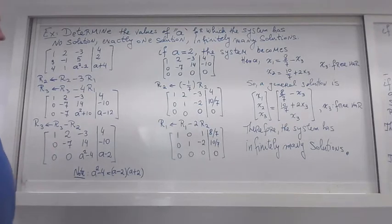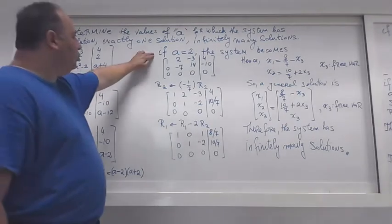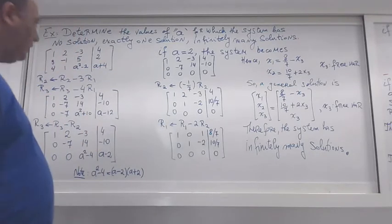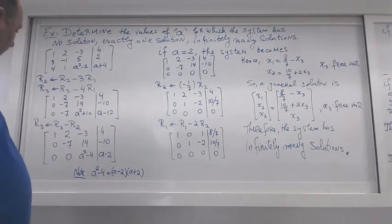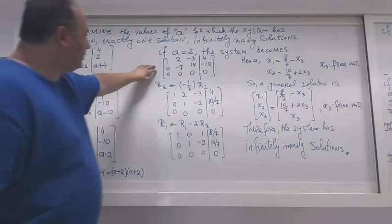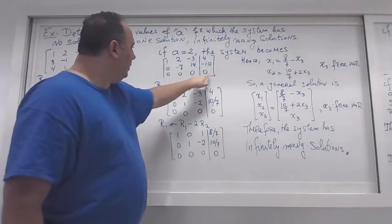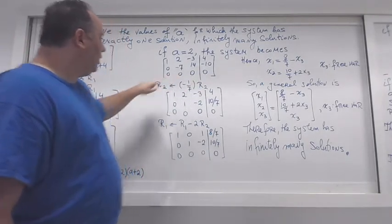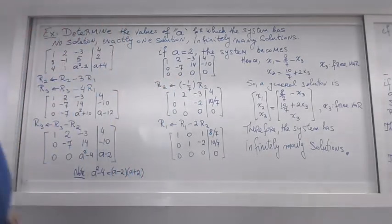So in our case the problematic values are 2 and -2. Let's start with a = 2. When a equals 2, the expression (a - 2) becomes 0 and (a² - 4) also becomes 0, so the last row of the matrix becomes a row of all zeros.